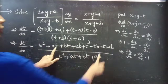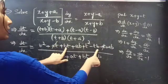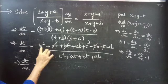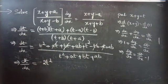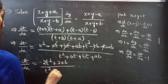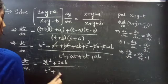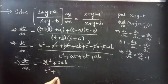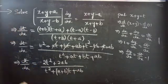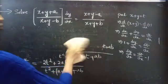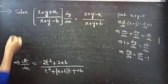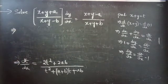In the numerator, the at and -at terms cancel, and the bt and -bt terms cancel. This gives dt/dx = (2t² + 2ab) / [(t + a)(t + b)]. You can factor the numerator: taking common terms from the second and third terms gives (a + b)t + ab, so the numerator becomes 2t² + 2(a+b)t... wait — 2t² + 2ab.